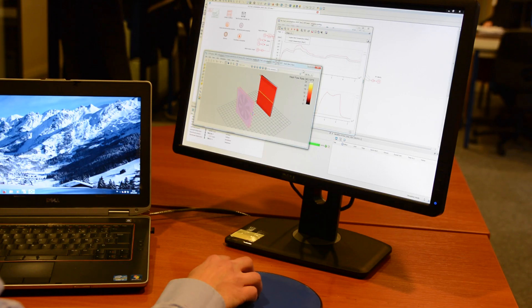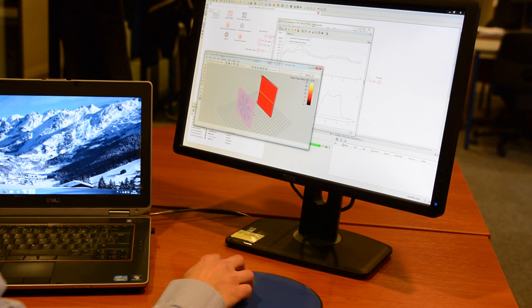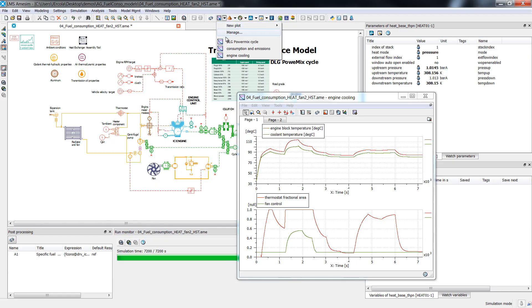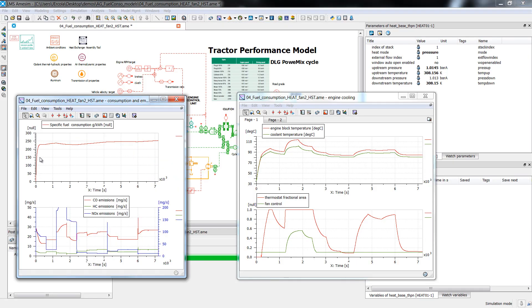LMS AIMSIM also supports the mechatronic development of mobile actuation systems and power split transmissions. Operability and drivability can be assessed by completing not only the model of actuators with the mechanical parts, but also by integrating the control strategies.